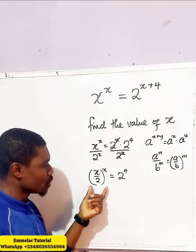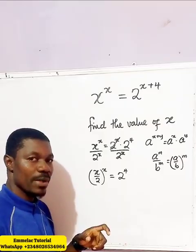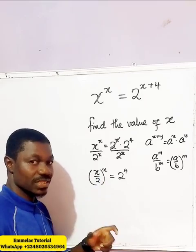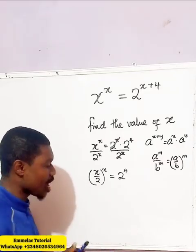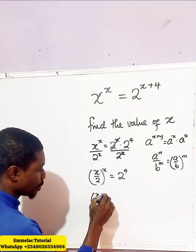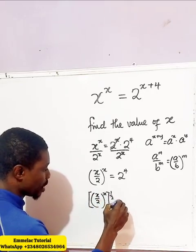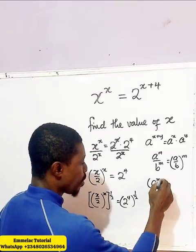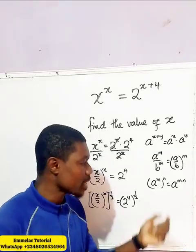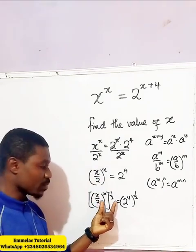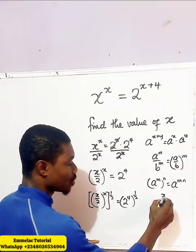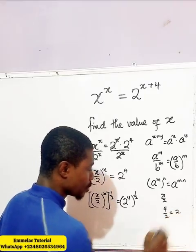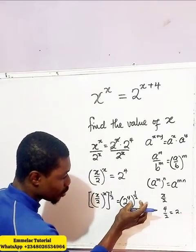I want to raise both sides of the equation to the power of one half, so that both the base and the exponent become the same. Raising both sides to the power of 1/2, we get x over 2, raised to the power of x, all raised to the power of 1/2, equals 2 raised to the power of 4, all raised to the power of 1/2. Recalling that a raised to the power of m, all raised to the power of n, equals a raised to the power of m·n: x times 1/2 gives x over 2, and 4 times 1/2 gives 4 over 2, which is 2.